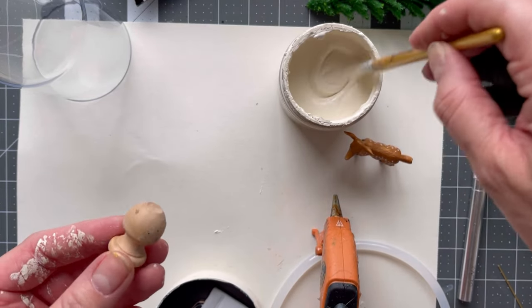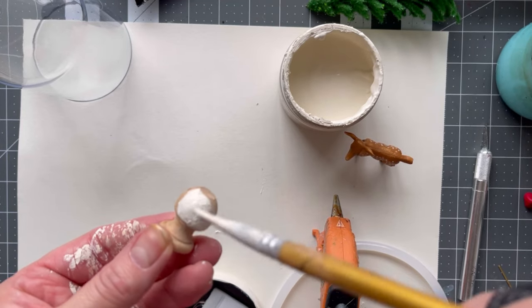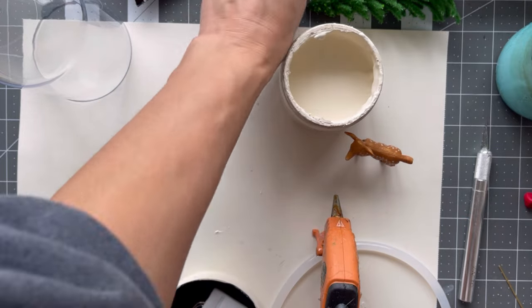I also got these little wood knobs from Hobby Lobby. I had texture paste on that before and just painting that to match.